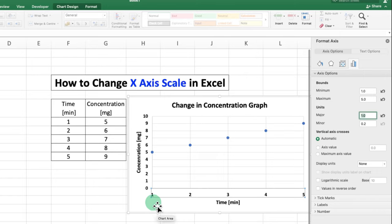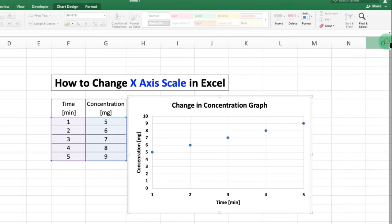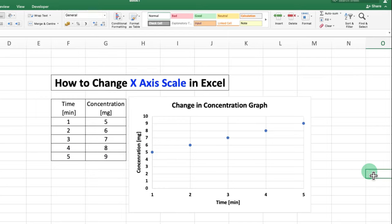And as you can see, the numbering starts from 1, 2, 3, 4, 5. In this way, you can change x-axis scale in Excel.